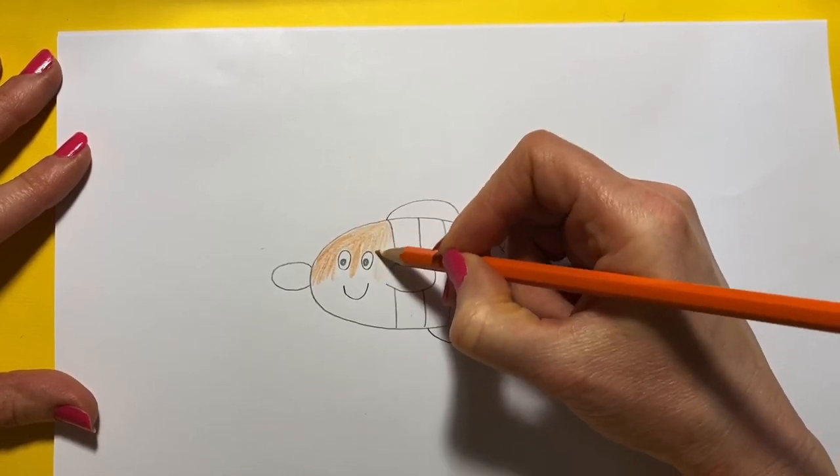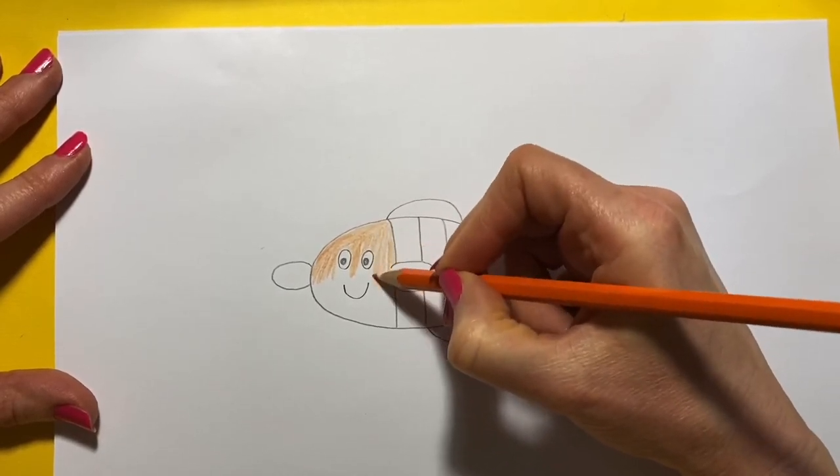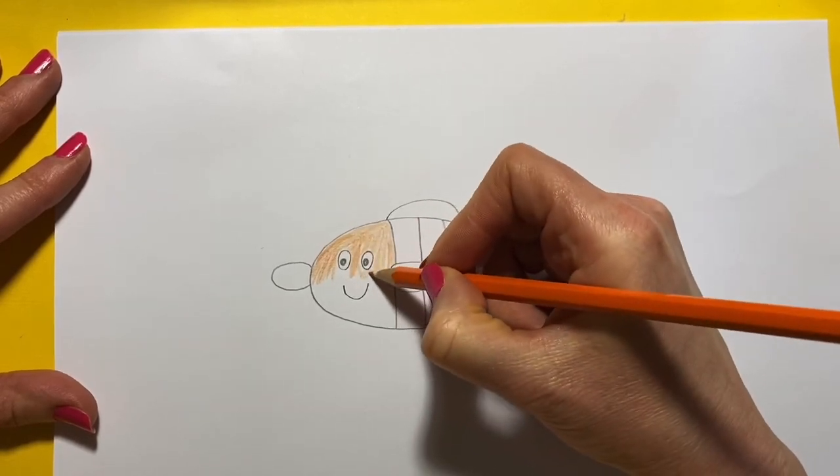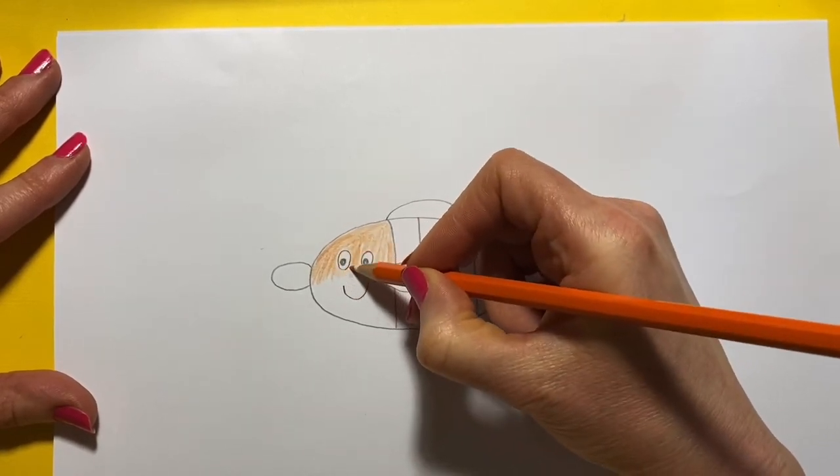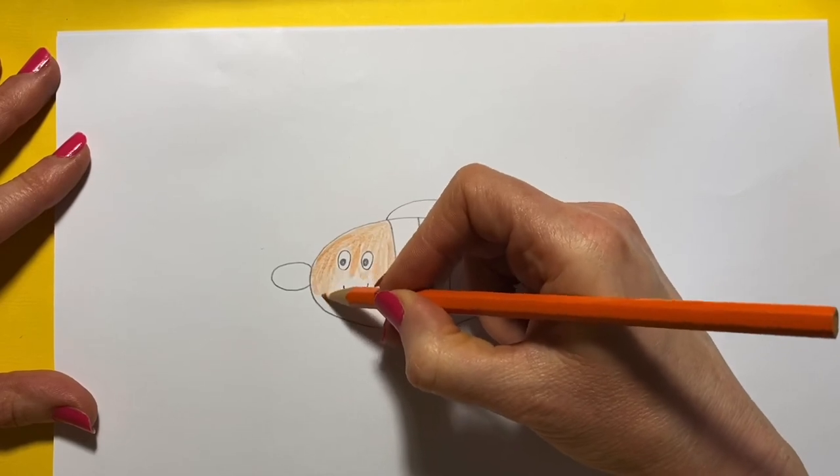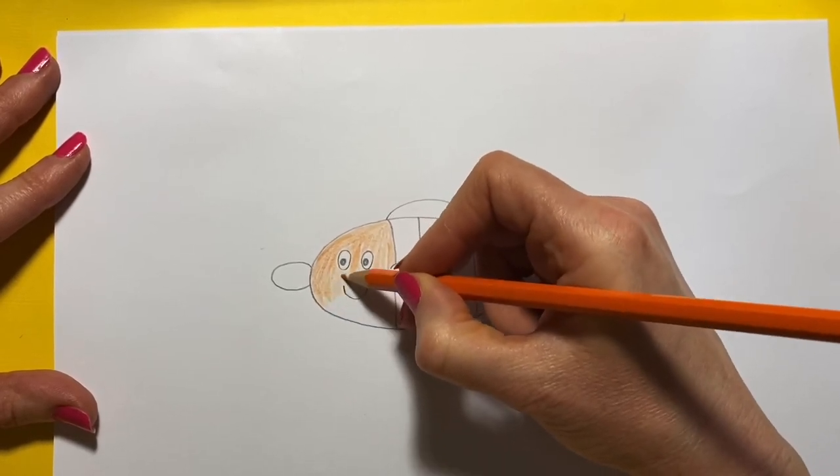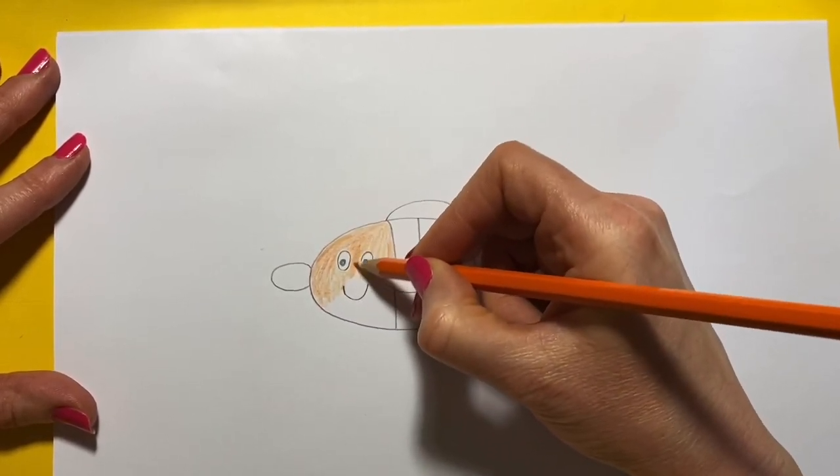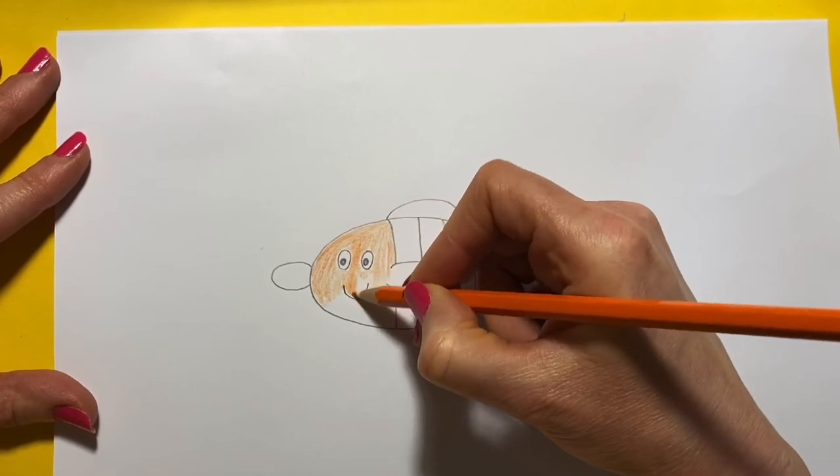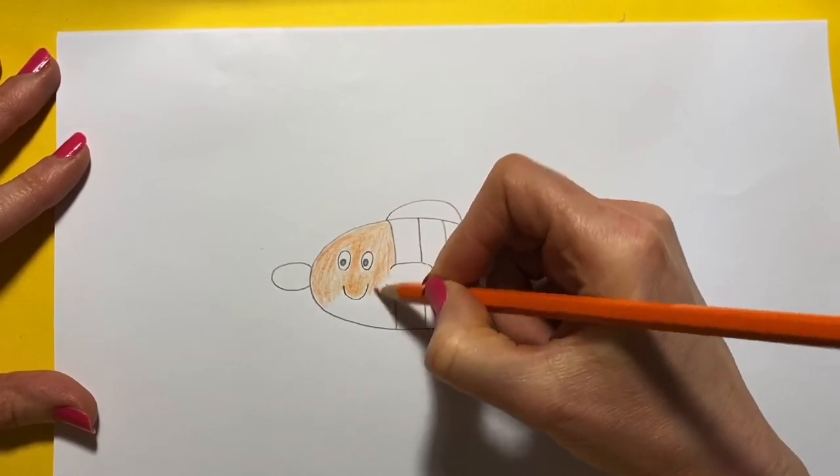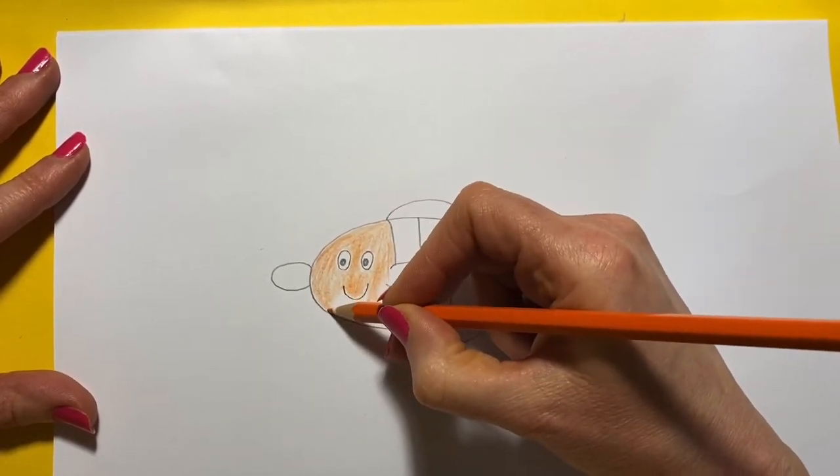There we go, just make sure you don't get the eyes. Try to color around the eyes like that. It's a bit tricky when you have to color around a shape, isn't it? So just take your time.